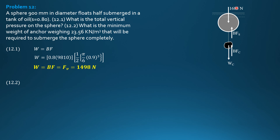For part two, using the figure as our guide: the weight of the sphere is 1685 N. We have the buoyant force on the sphere and on the concrete anchor, and the weight of the anchor. Setting summation of vertical forces equal to zero: buoyant force in the concrete anchor plus buoyant force in the sphere equals weight of concrete plus 1685.